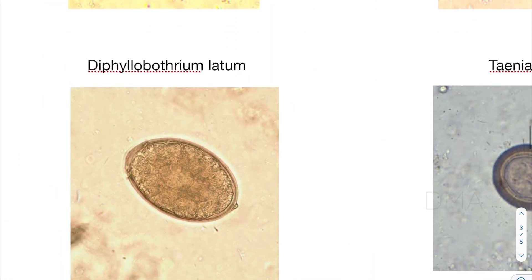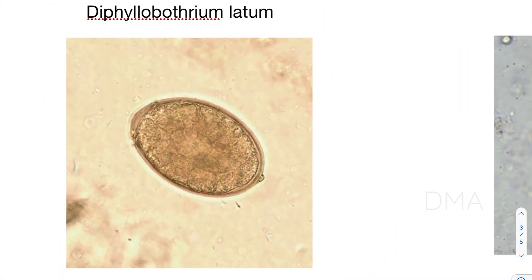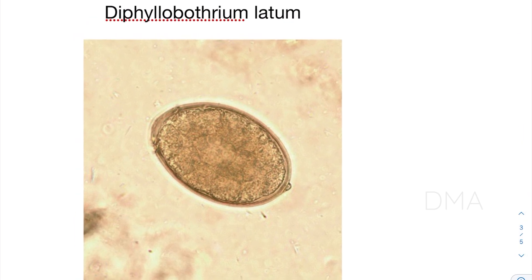Let's take a look at the Diphyllobothrium latum egg. You can see that in this egg there is an operculum at one end and a small knob on the other end. From these features, we can conclude that this is a Diphyllobothrium latum egg.